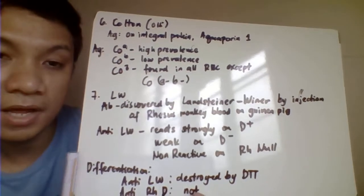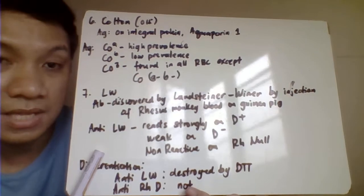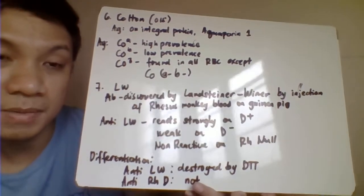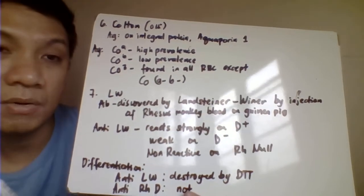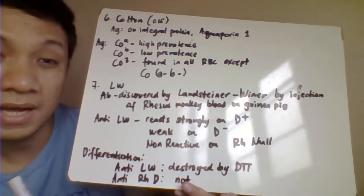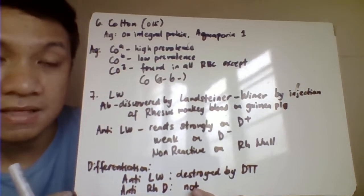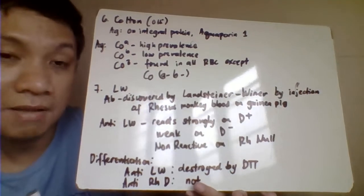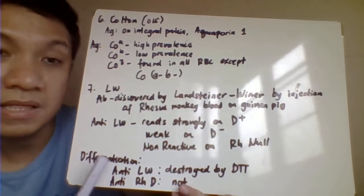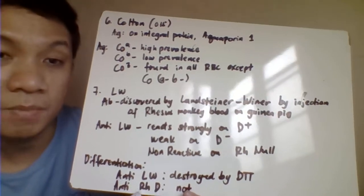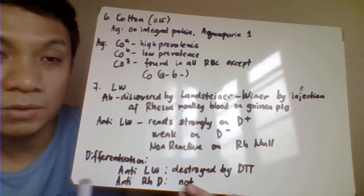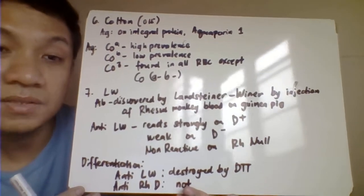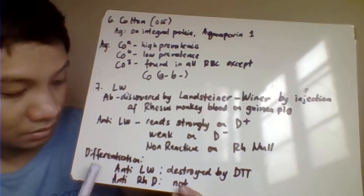Then we have the LW blood group. This one is closely related with our RH D, RH blood group system. The antibody related to this blood group has been identified and isolated by Landsteiner and Wiener. So it was called LW, which they thought was the same antibody identified by Levine and Stetson, which later became your anti-RH antibody. But the antibody which has been identified and isolated by Landsteiner and Wiener became the LW. This is the antibody isolated from administering rhesus monkey blood with the guinea pig.